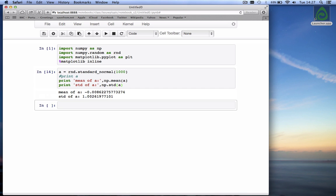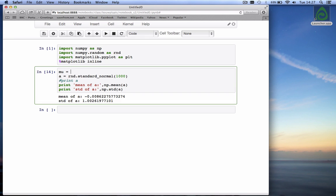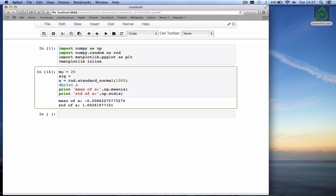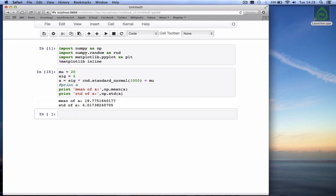What now if we want to draw numbers from a normal distribution with a different mean and a different standard deviation? To do that, we draw the numbers from a standard normal distribution, we multiply those numbers by the standard deviation we want and we add the mean. So if we specify, for example, that the mean mu is equal to 20 and the standard deviation sigma is equal to 4, then if we draw these numbers and multiply the numbers drawn from a standard normal distribution with sigma and we add the mu, then what we get is, in this case, a thousand numbers with a mean that is 19.77 and a standard deviation that is 4.02, which is very close to the mu and the sigma we specified.